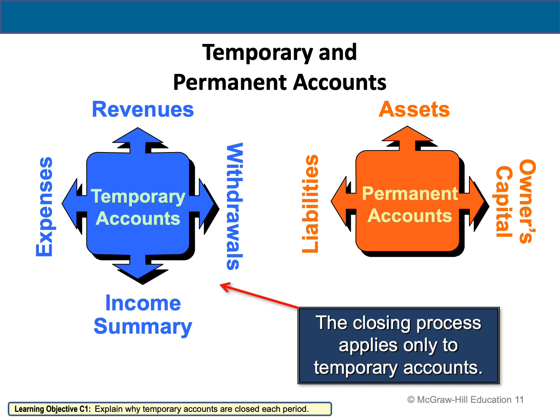Permanent accounts include assets, liabilities, and owner's capital. Their ending balances can be carried to the next year. For example, the asset balance at end of 2019 carries forward to 2020, and the same for liabilities. But temporary accounts — revenues, withdrawals, and expenses — must be closed at year-end because each year has different amounts. That's why we close expenses, revenues, withdrawals, and income summary at the end of every year.